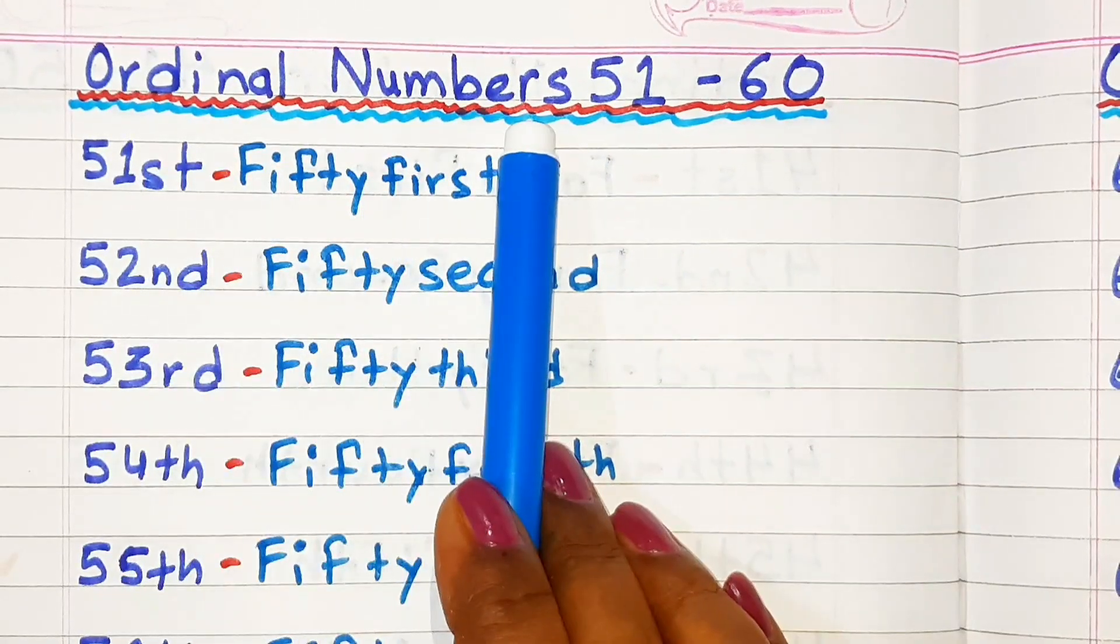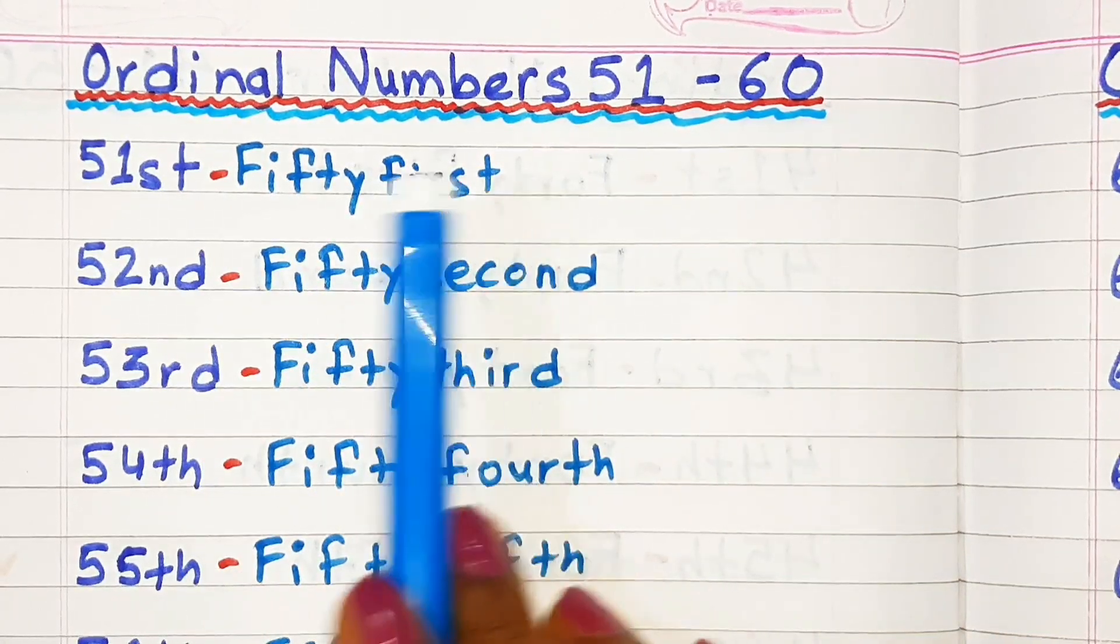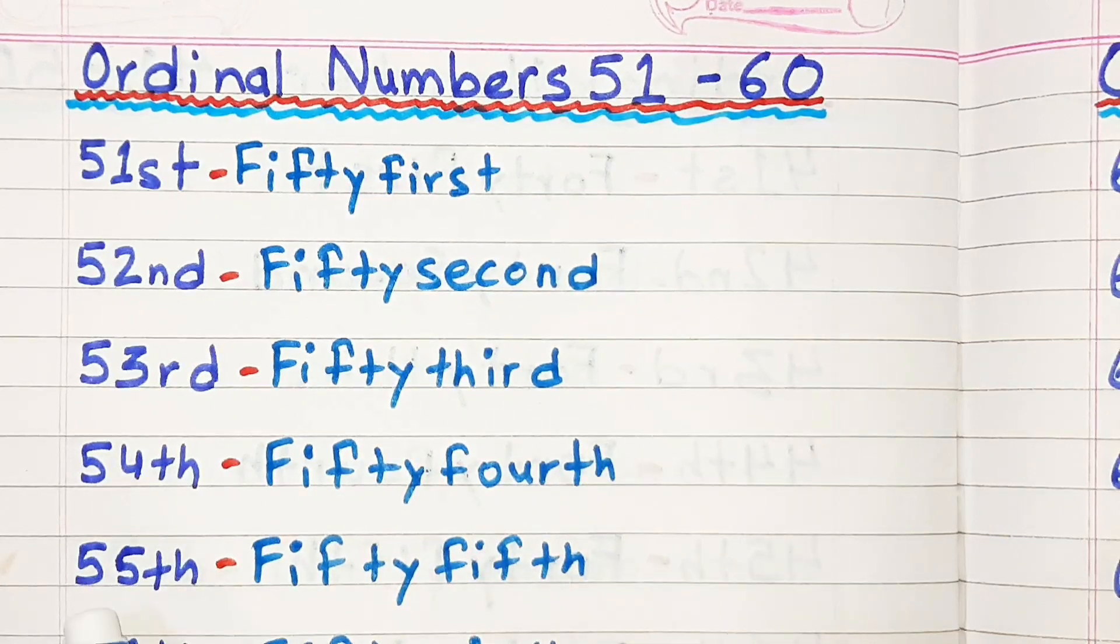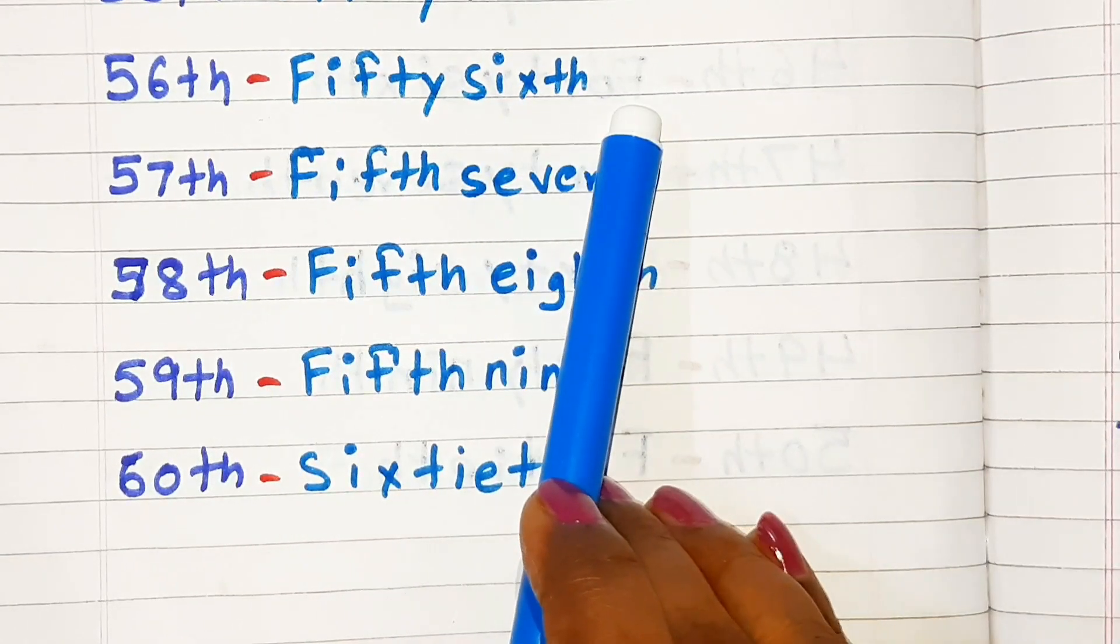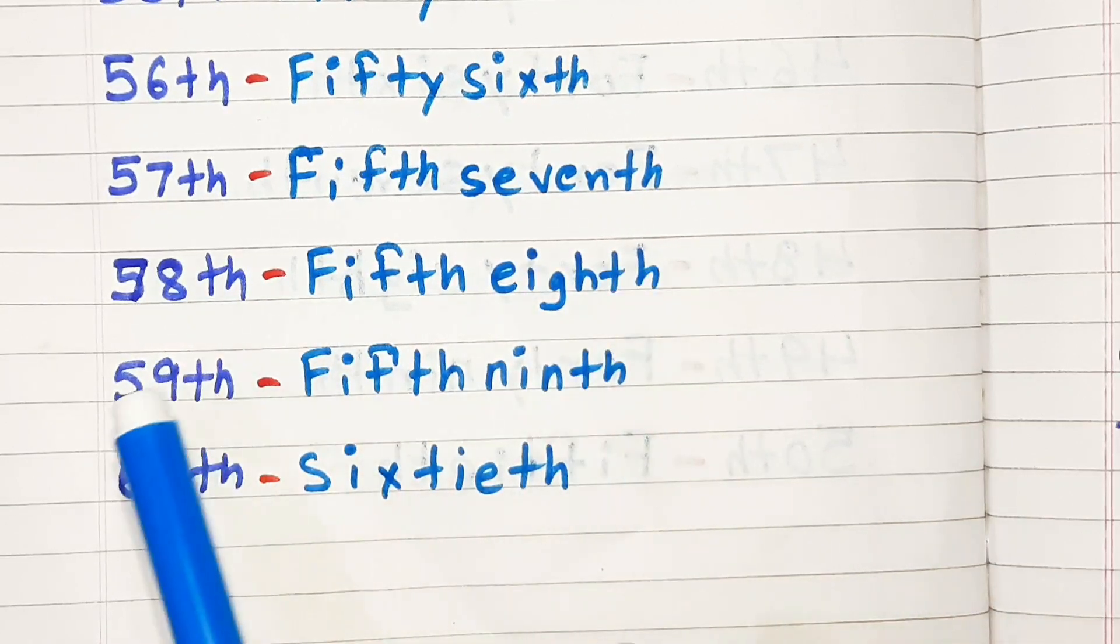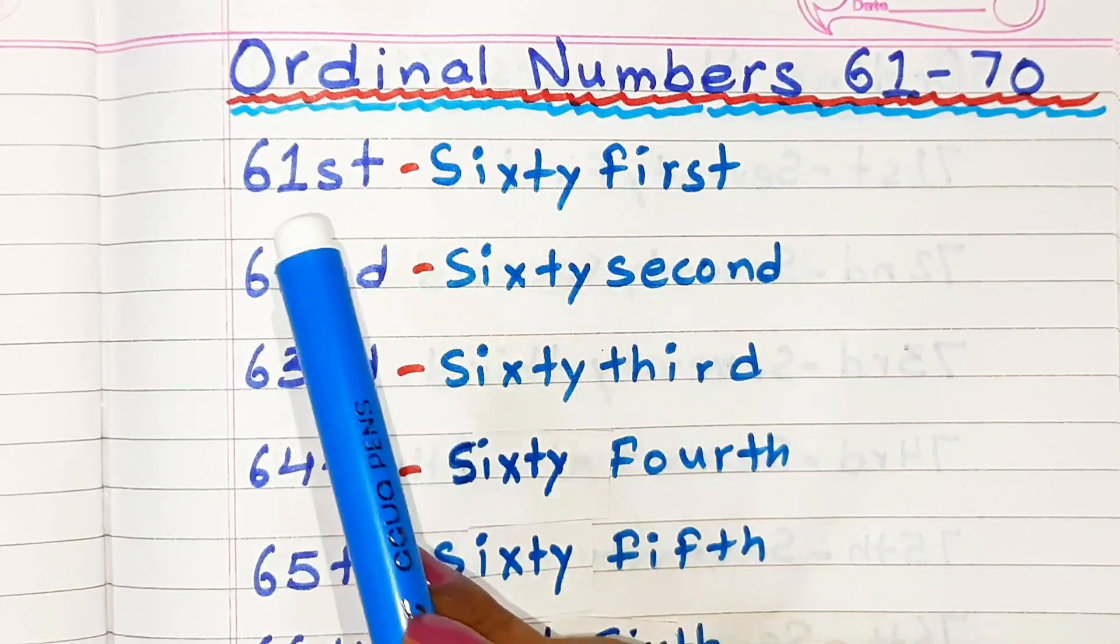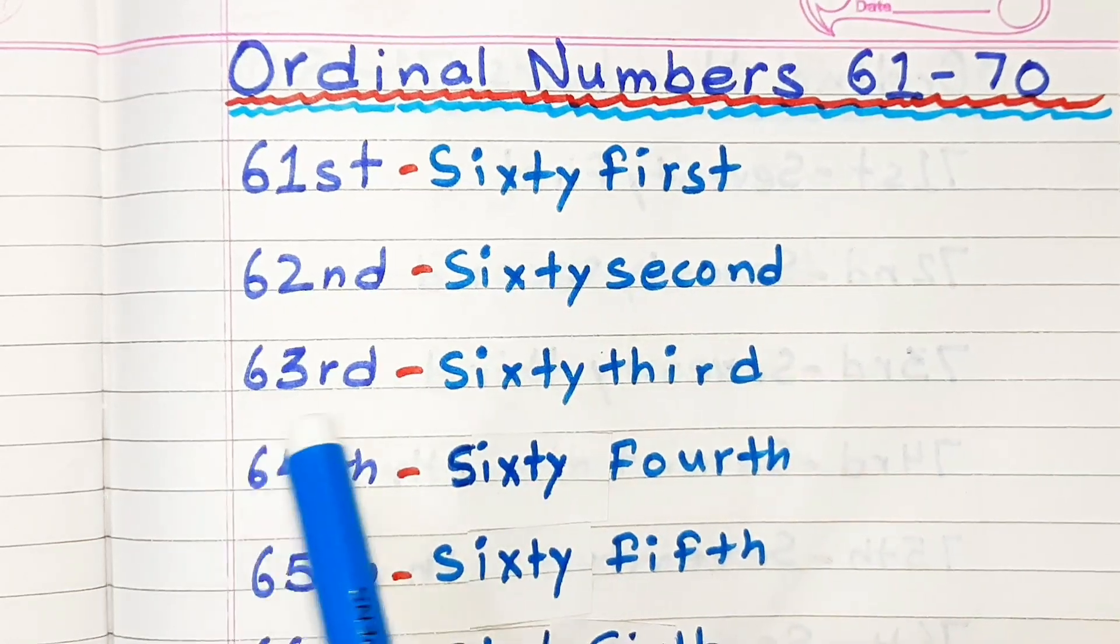Ordinal Numbers Fifty-one to Sixty: Fifty-first, Fifty-second, Fifty-third, Fifty-fourth, Fifty-fifth, Fifty-sixth, Fifty-seventh, Fifty-eighth, Fifty-ninth, Sixtieth.